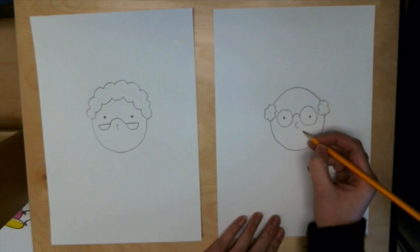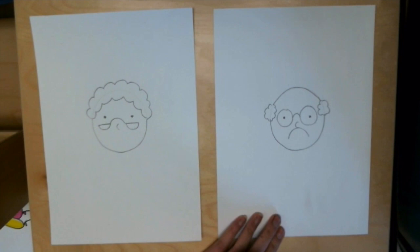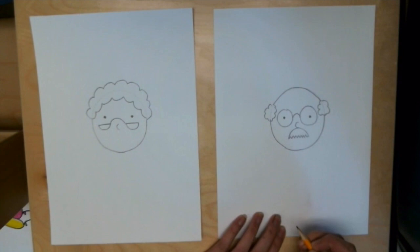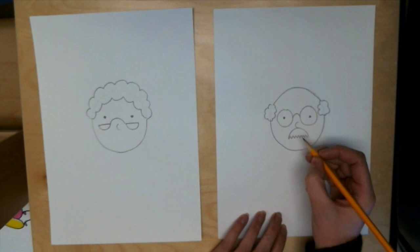Now the grandpa is also going to get a big mustache. So underneath his nose I'm going to draw a rainbow that touches his nose and then goes back down. It kind of looks like a big frown right now but I'm gonna make this a mustache by drawing a zigzag line across to connect those two lines. Now he's got a big bushy mustache.